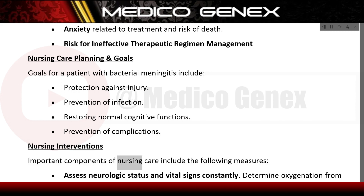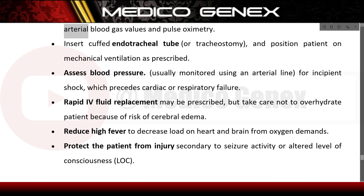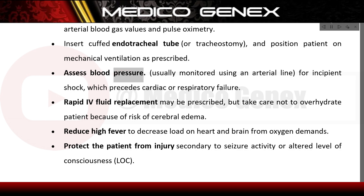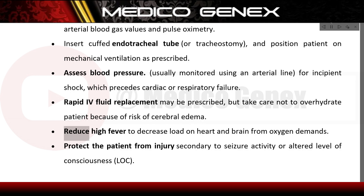Nursing interventions include: continuously assessing neurologic status and vital signs; determining oxygenation from arterial blood gas values and pulse oximetry; inserting a cuffed endotracheal tube or tracheostomy and positioning the patient on mechanical ventilation as prescribed. Blood pressure is usually monitored via an arterial line to detect incipient shock preceding cardiac or respiratory failure. Rapid fluid replacement may be prescribed, but care must be taken not to over-hydrate due to the risk of cerebral edema. High fever should be reduced to decrease cardiac and cerebral oxygen demands.